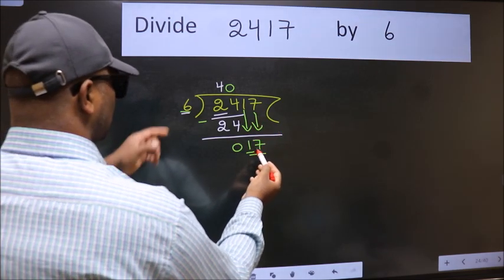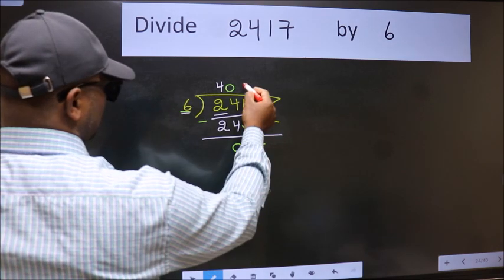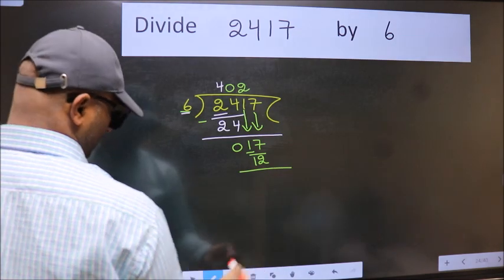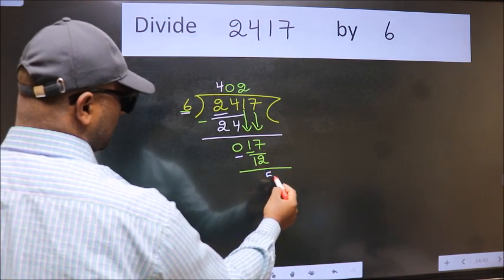A number close to 17 in 6 table is 6 twos, 12. Now we subtract. We get 5.